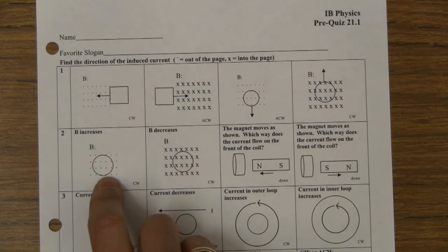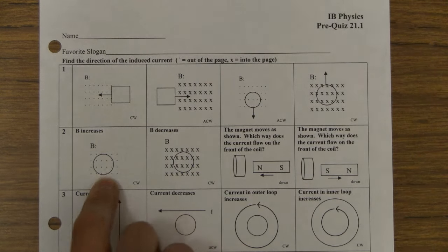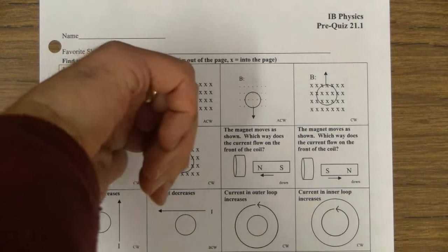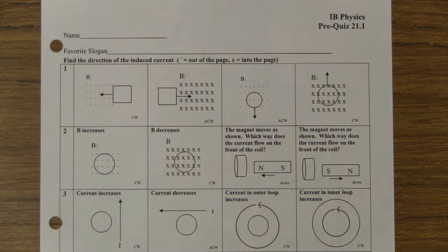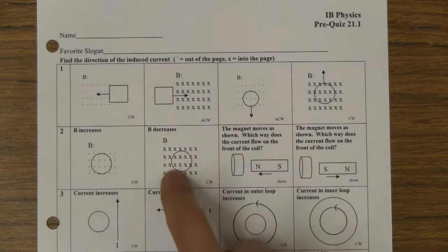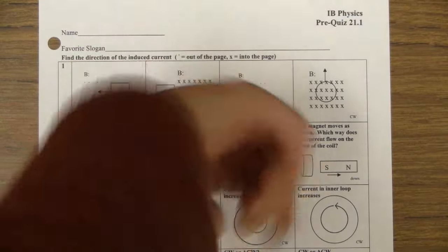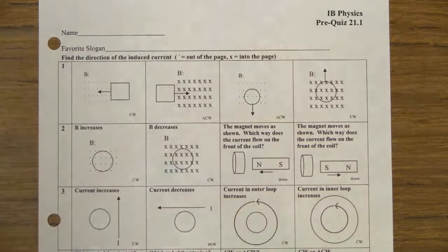So now this thing's not moving, but the magnetic field's increasing. So we're gaining flux out of the page. We oppose that, so we go clockwise to create flux into the page — my thumb is into the page. Here, we're losing flux into the page because the B is decreasing. So we create flux into the page — we replace it. We lose it, we replace it.